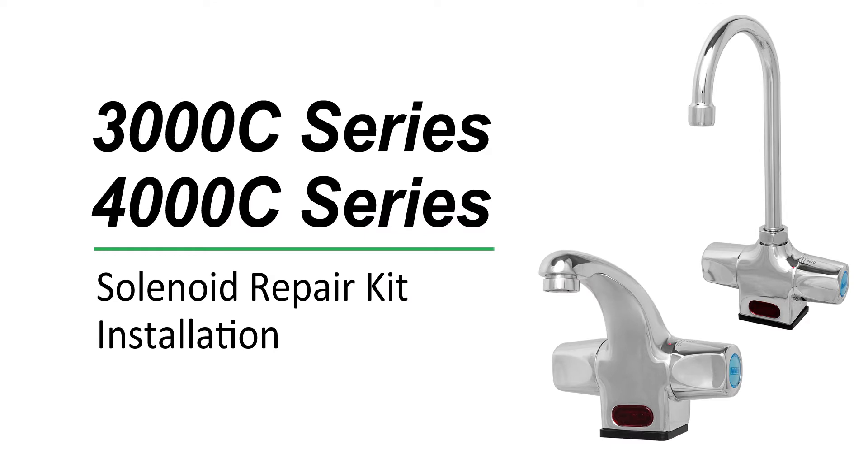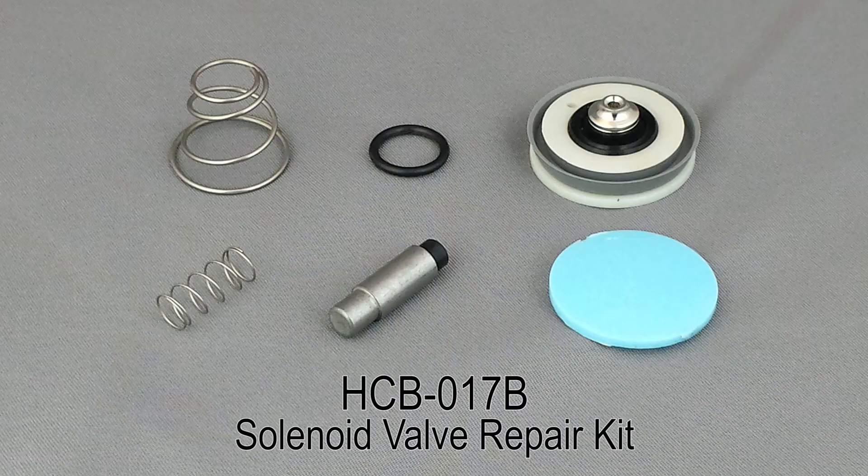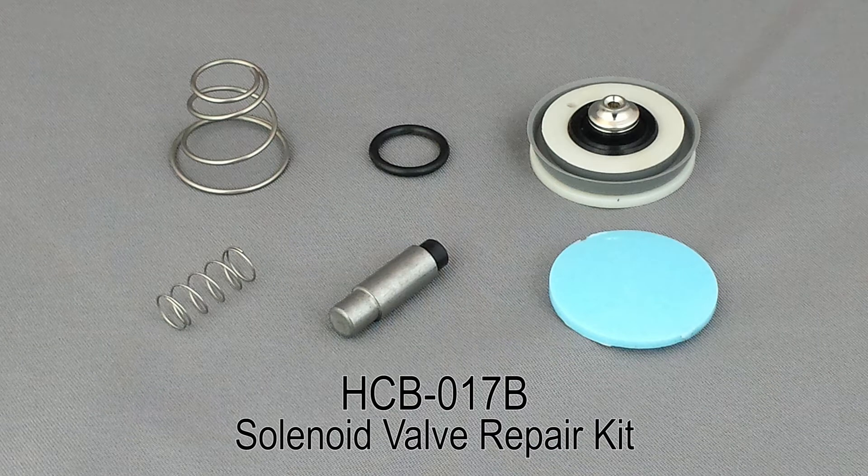In this video we will be servicing the solenoid valve assembly for the 3000C or 4000C series faucets by installing the HCV017B solenoid valve repair kit. We recommend this service every four years to keep the faucet running optimally.